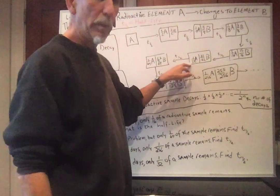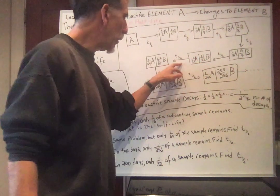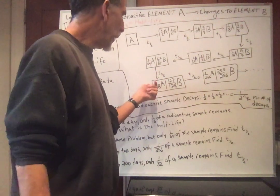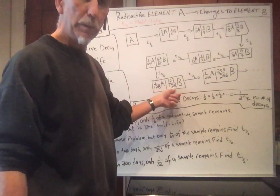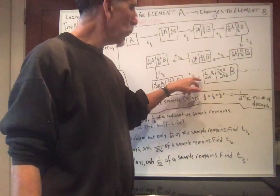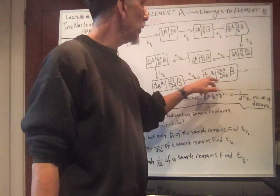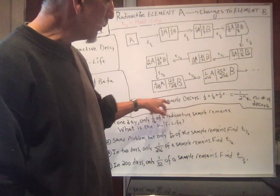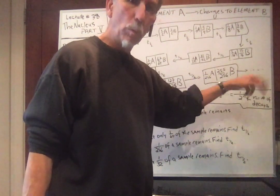Half of a sixteenth is one-thirty-second, so one-thirty-second of the sample is A and thirty-one thirty-seconds is B. After another half-life, half of one-thirty-second is one-sixty-fourth — sixty-three sixty-fourths will be B. Half of sixty-four gives one-one-twenty-eighth of the sample as A, and one-twenty-seven over one-twenty-eighth as B. So the amount of A is decreasing exponentially — halving and halving. This gives us one over two to the N, where N is the number of decays.